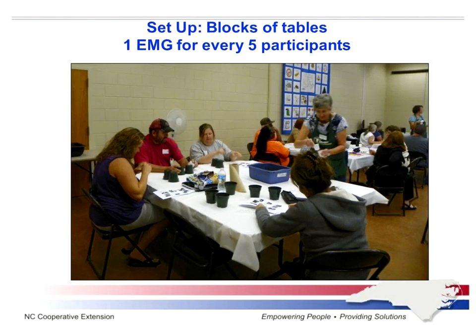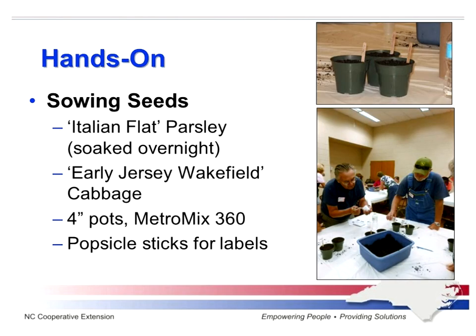We set the room up in blocks of tables. We had one master gardener for every five participants to lead the hands-on part. The two hands-on activities were sowing seed — we let participants sow parsley seed, which we soaked overnight for them, and some cabbage seed, Early Jersey Wakefield. On the table we had pots, seed starting mix (we used Metro Mix 360), and popsicle sticks for labels, which are much cheaper than the plastic labels you can buy.